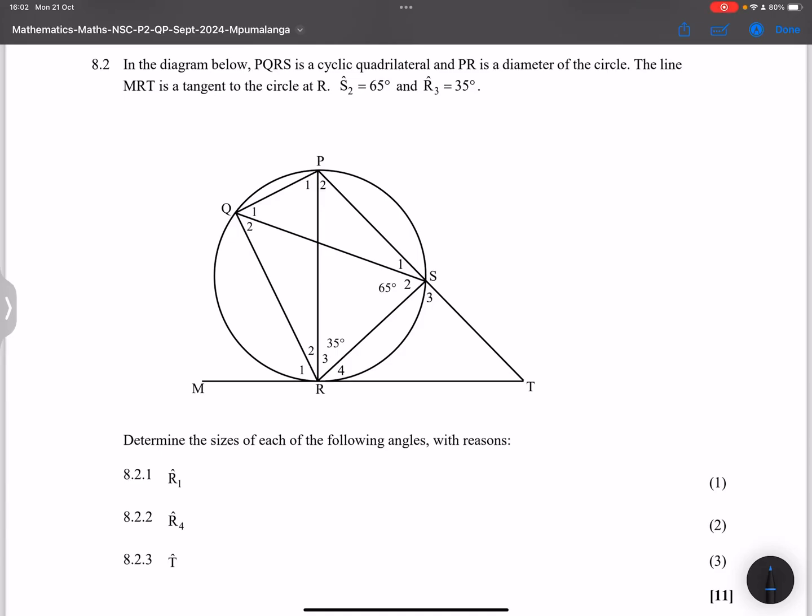All right, now on to 8.2. They say in the diagram below, we've got PQRS, which is a cyclic quadrilateral. And they say that PR is a diameter to the circle.